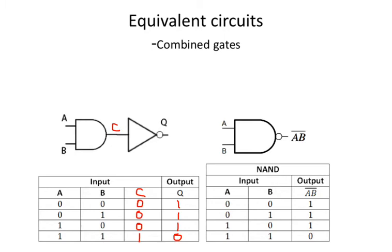So what we have here is the output of this combination circuit: 1, 1, 1, 0. That's the output of this combination circuit. Notice that this output 1, 1, 1, 0 is the same as the NAND gate.